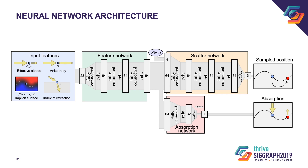Now let's look at our neural network architecture. With input features including effective albedo, medium anisotropy, index of refraction, and the surface descriptor, we pass inputs to a feature network consisting of three fully connected layers which pre-process them. The pre-processed features are then fed to a scatter network and an absorption network. The scatter network uses these features and a Gaussian random vector to sample an outgoing location. The absorption network computes the probability of absorption, which is then used to weight samples at render time.